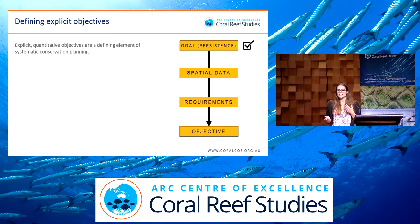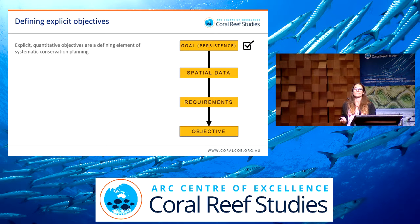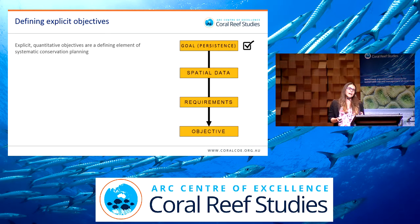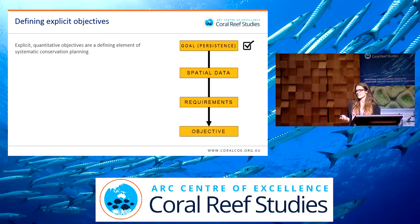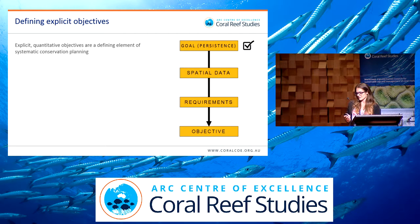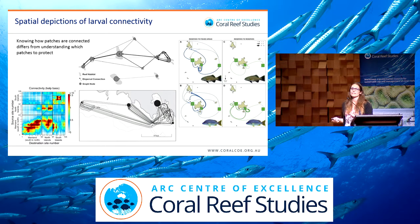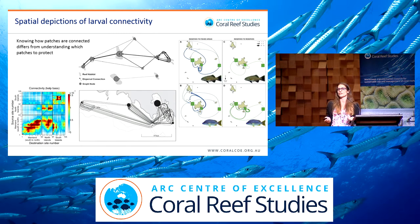The second conceptual challenge is that explicit quantitative objectives are a defining element of systematic conservation planning. If we're going to incorporate connectivity into conservation planning, we really need to set explicit objectives for connectivity. Defining objectives requires three pieces of information: a clearly articulated goal, ideally in terms of persistence; spatial information on a biodiversity feature or process of interest; and an understanding of the relationship between the amount of that feature or process and our persistence goal. Spatial data on larval dispersal are increasingly available for different species in different locations worldwide, so we no longer have an excuse that there's no data available.